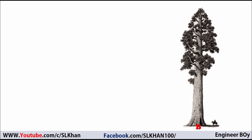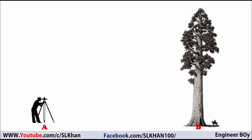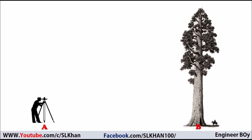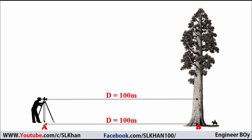Let's say we have a tree whose height is to be determined, and an instrument that can measure a vertical angle — let's say a Theodolite set at point A. Once we have the Theodolite at point A, we'll measure the distance between point A and point B, which is the distance between the instrument and the object. This can be done using a measuring tape — let's say this distance is 100 meters.